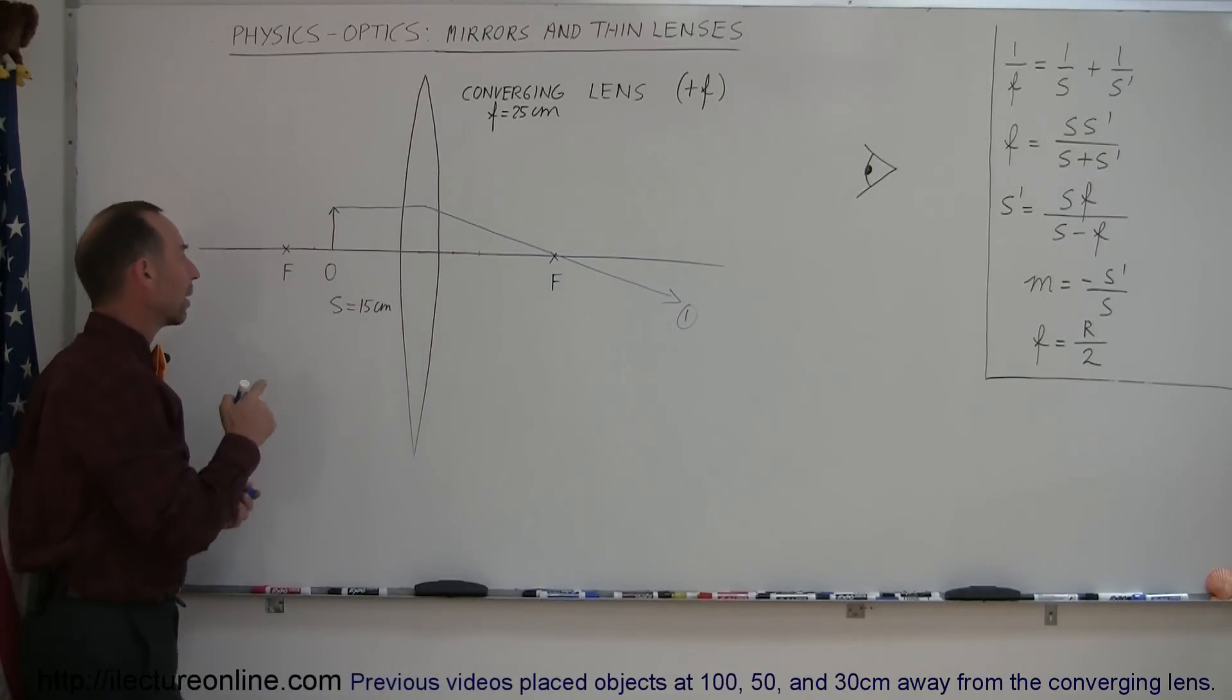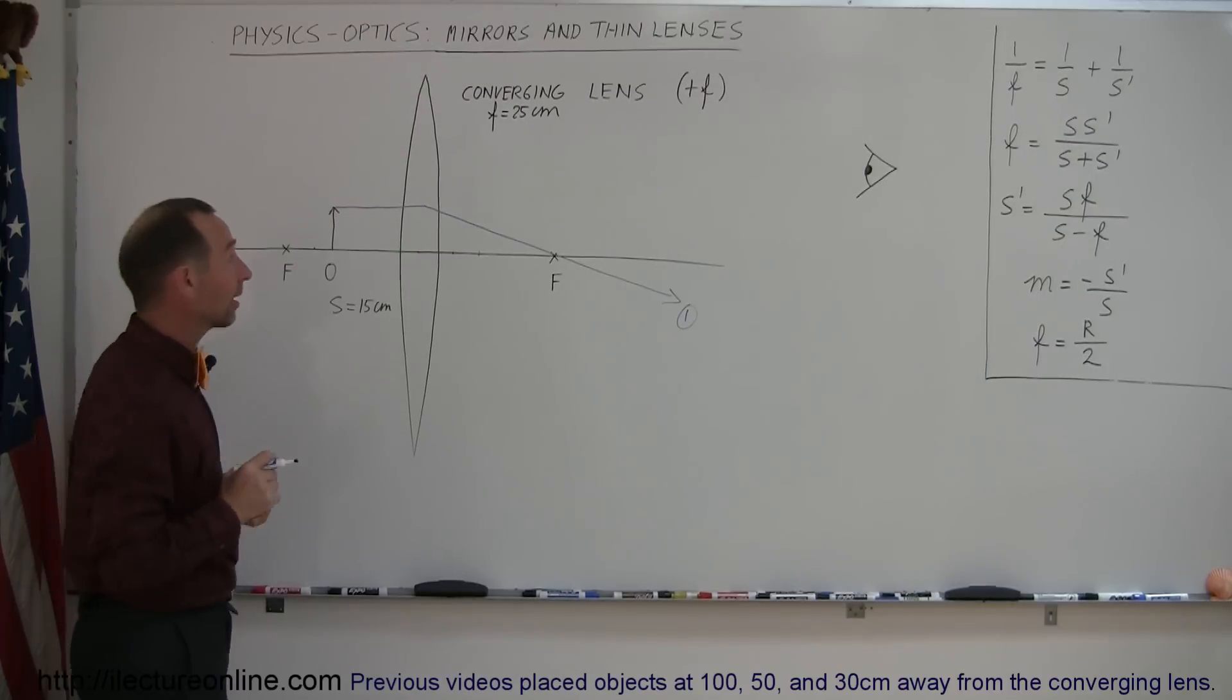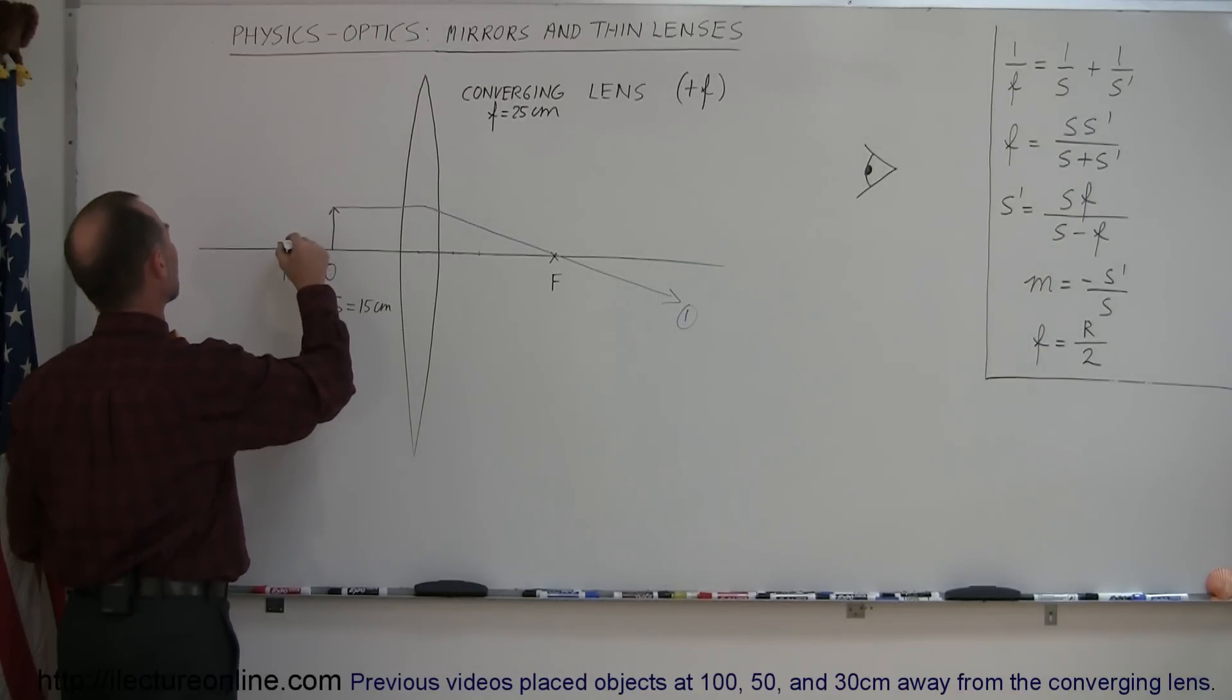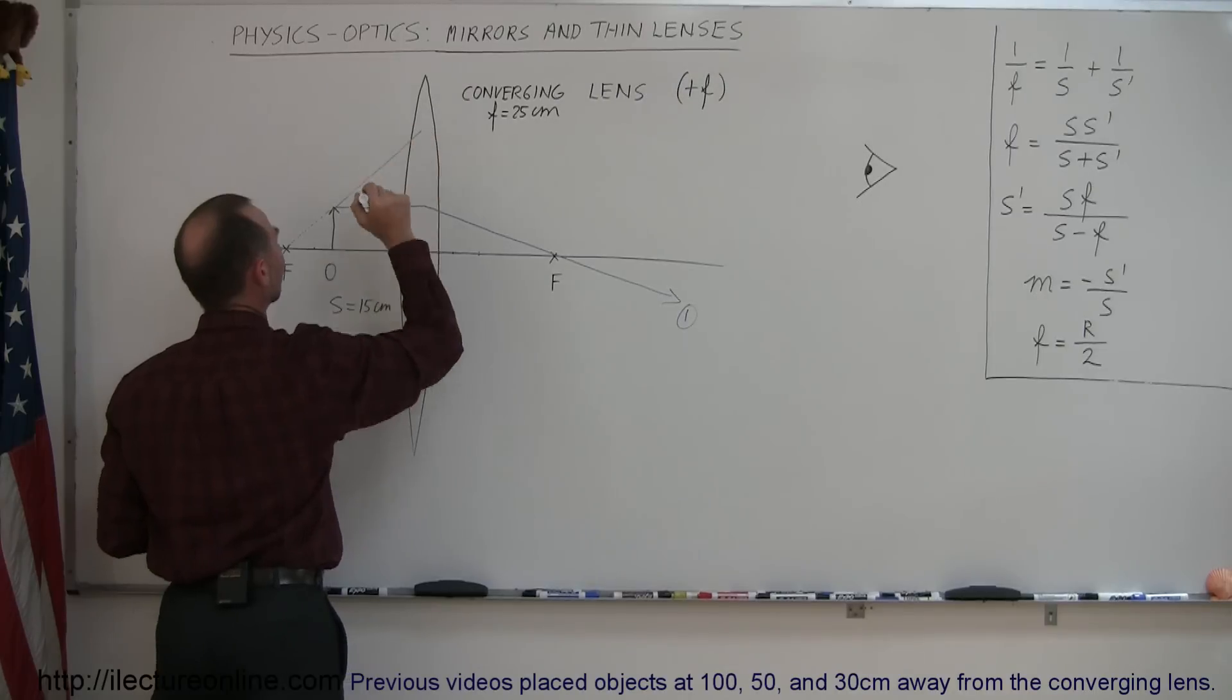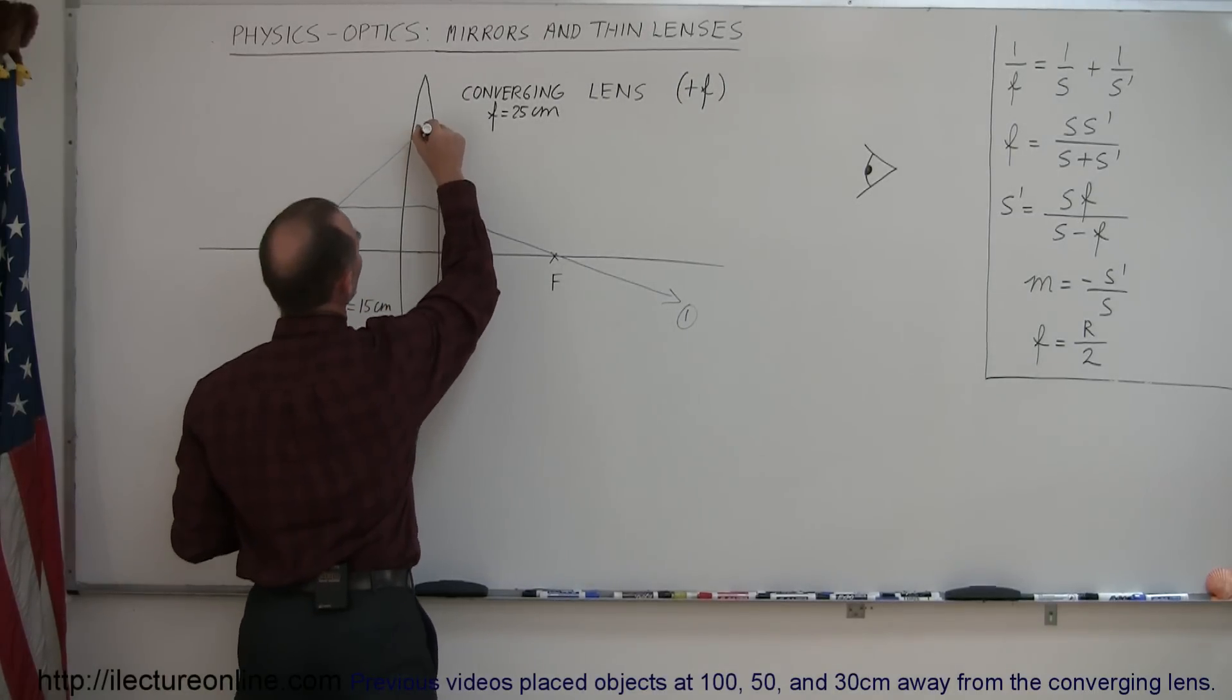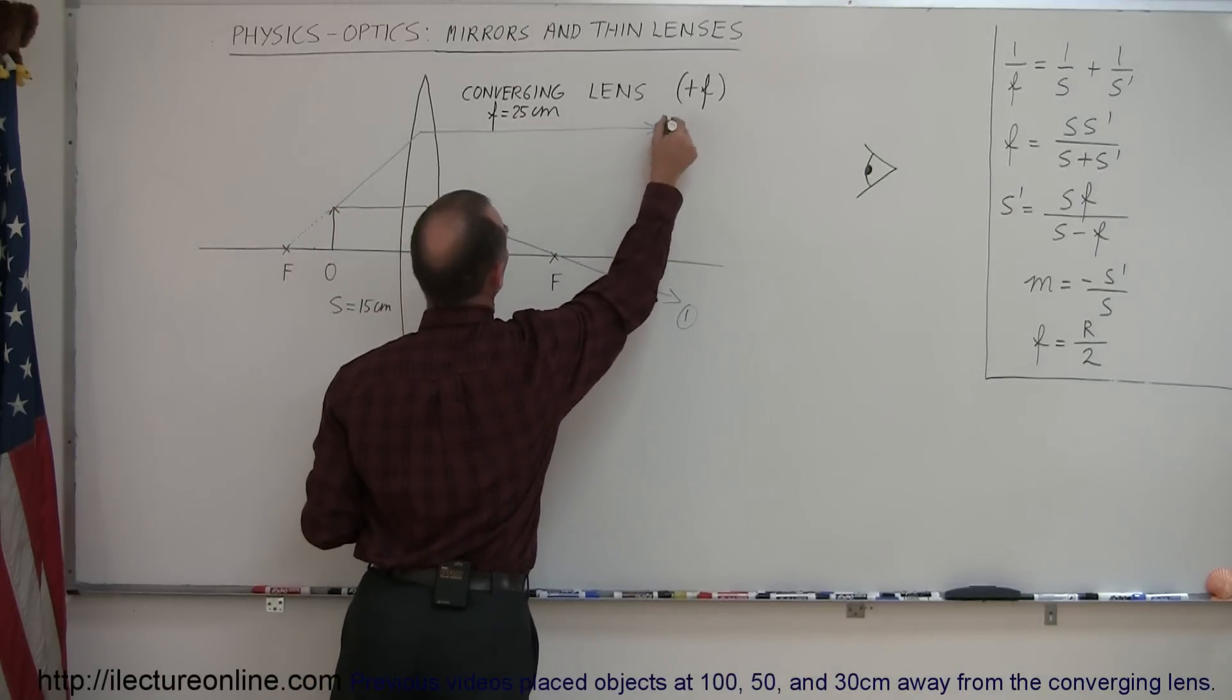Ray number two, we draw from the object through the focal point to the lens, through the focal point on the same side of the lens. And of course, that's a problem because we're already past it. But just like we did with the mirrors in the past, we draw a little line from the focal point to the top of the object, then continue with that ray this way until it hits the lens. And of course, at that point, it's going to refract or bend, and it's going to continue on straight this way. And so that's ray number two.